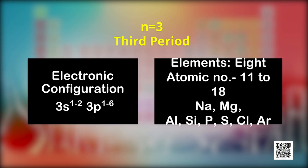The third period corresponds to the third energy shell (N=3) with 3s, 3p, and 3d subshells. According to the Aufbau principle, electrons are added to different orbitals in order of increasing energy. Since the energy of the 3d subshell is higher than that of the 4s subshell, in the third period electrons can be filled only in 3s and 3p subshells — one orbital of 3s and three orbitals of 3p — accommodating a maximum of eight electrons. Therefore there are eight elements in the third period, not 18. It begins at sodium (atomic number 11) and ends at argon (atomic number 18).